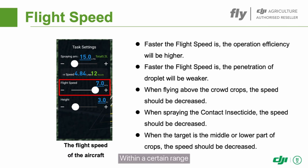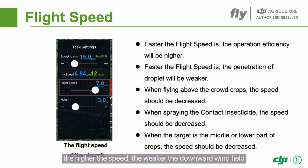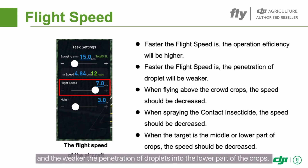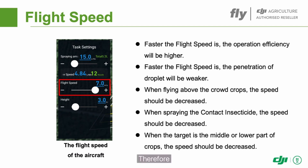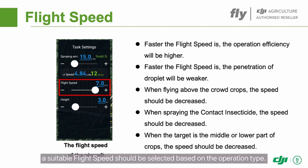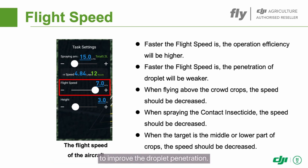Within a certain range, the higher the speed, the weaker the downward wind field, and the weaker the penetration of droplets into the lower part of the crops. Therefore, a suitable flight speed should be selected based on the operation type. Dense crops and contact pesticides require a lower flight speed to improve droplet penetration.